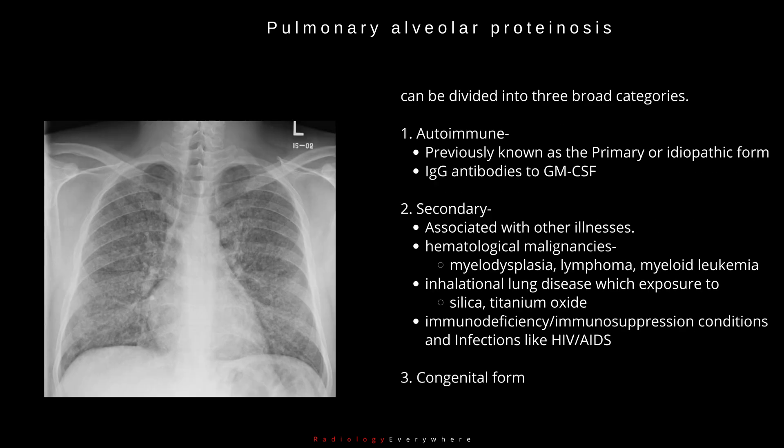PAP may be divided into three broad categories. First, autoimmune — previously known as the primary or idiopathic form — in which there are IgG antibodies to GM-CSF.